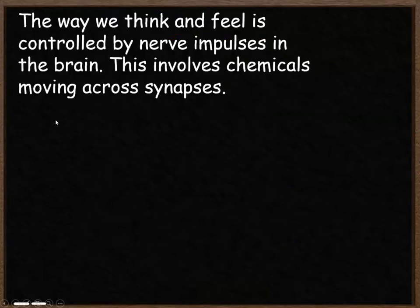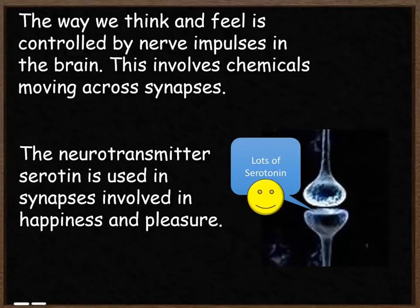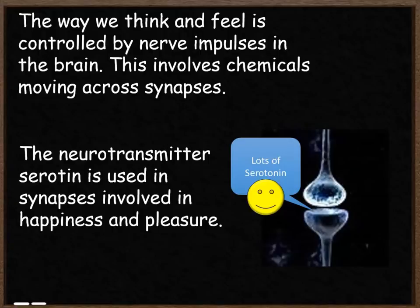The way we think and feel is controlled by nerve impulses in the brain, and that involves chemicals moving across synapses. The neurotransmitter serotonin is used in synapses involved in happiness and pleasure. If you have lots of serotonin in these synapses, that leads to feelings of happiness and pleasure. A condition called depression involves a lack of serotonin in these synapses, causing the person to feel depressed and unhappy.